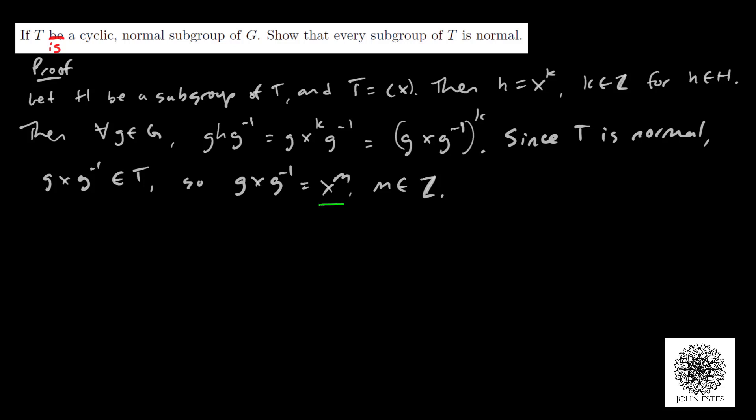Therefore, GHG^(-1), which is (GXG^(-1))^K, is the same as (X^M)^K, which is X^(MK), which equals X^(KM), or (X^K)^M. Since X^K is H, we have H^M.